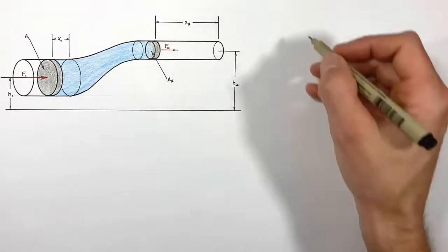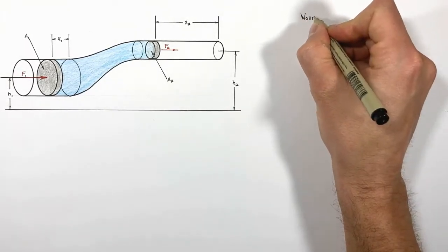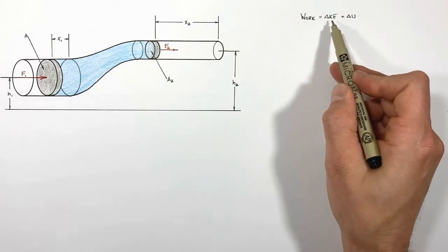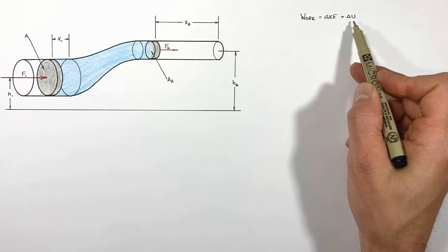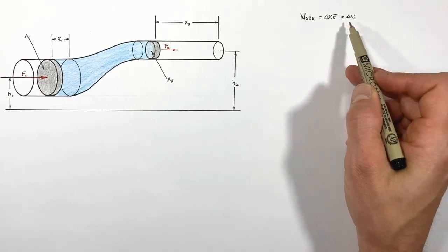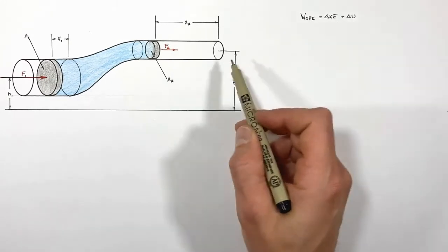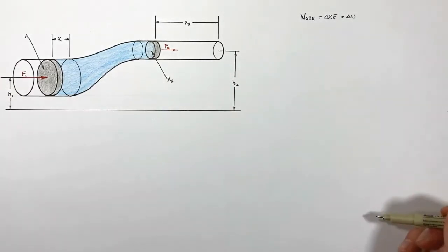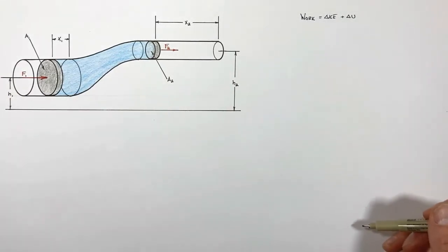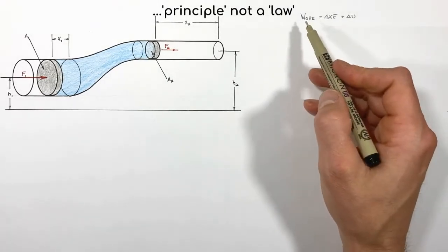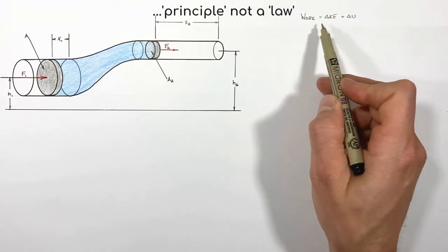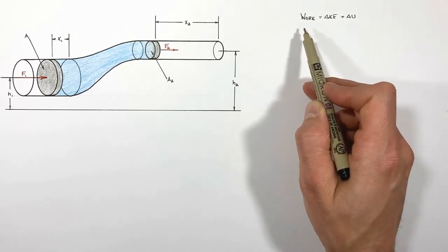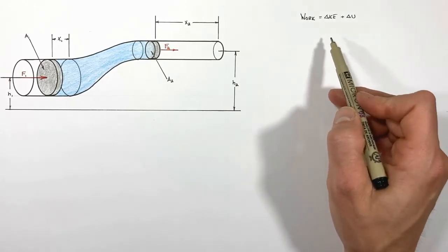The work-energy theorem states that work is given by the change in kinetic energy plus the change in potential energy of some particle or mass. All we're going to do is apply this to the situation, and what will pop out is Bernoulli's law. Now, I prefer to look at the work-energy theorem in terms of initial and final states within a system.